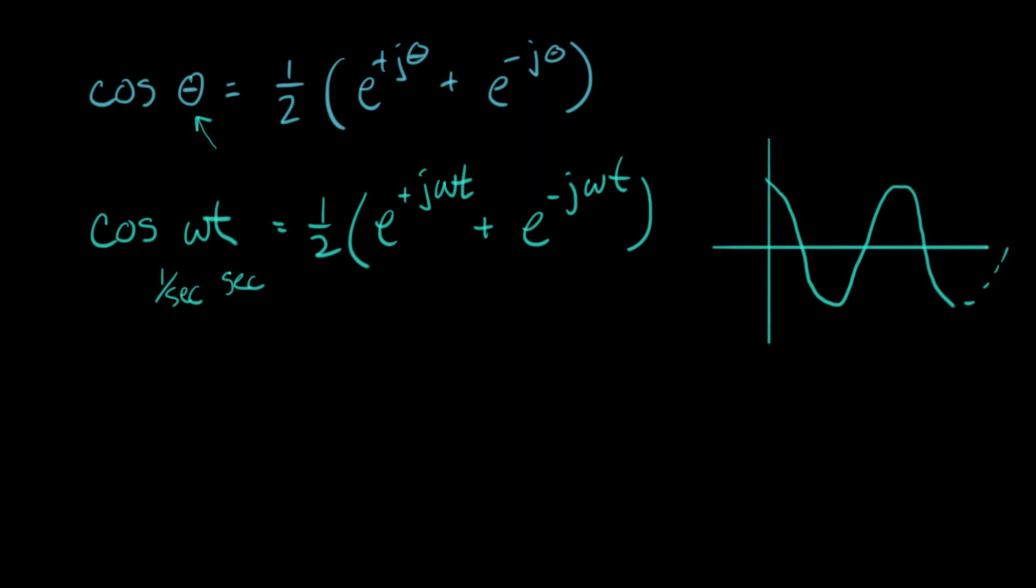But now what I want to do is I want to look at a really special thing. I want to look at what is this thing right here? What is this thing, e to the plus j omega t? And what we see is this cosine here is made of two of these things. So whatever these things are, I can make a cosine out of them. So now we're going to look really carefully at e to the j omega t.